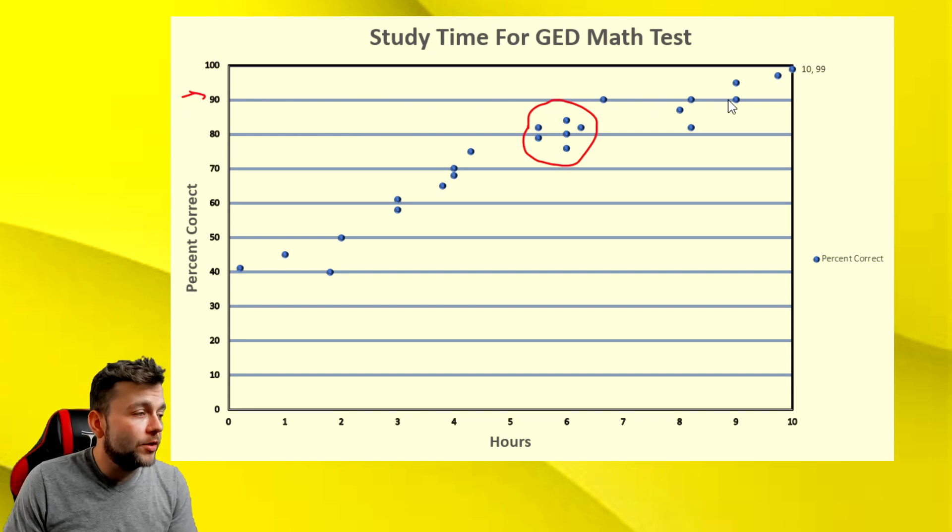If I ask you, how many hours do you have to study for the GED math test to score a 90 percent? You go ahead and you look at the 90 percent mark, the 90 percent line, and you follow it over. And it looks like we have three different data points, but it looks like the ones that will guarantee us or nearly guarantee us a 90 percent would be this zone right here. And that is at nine hours of study. So if you want to score a 90 percent, you're going to have to study for nine hours.